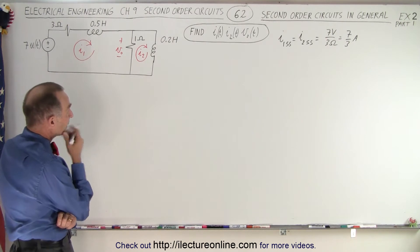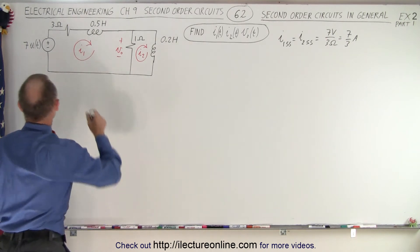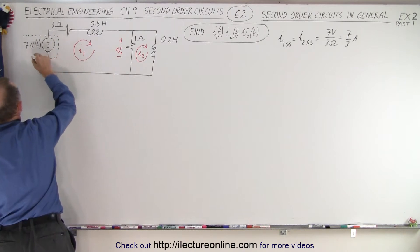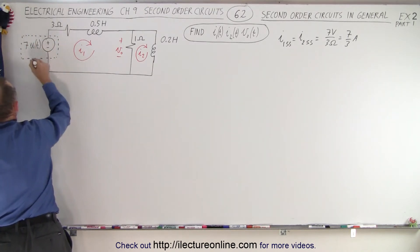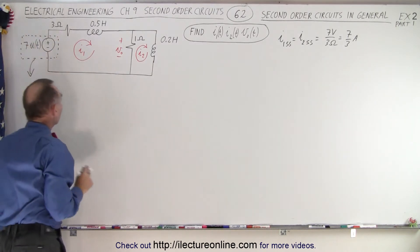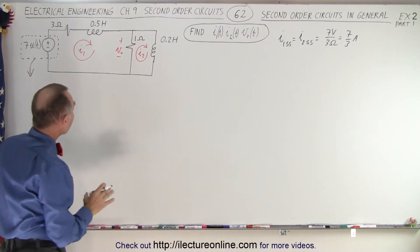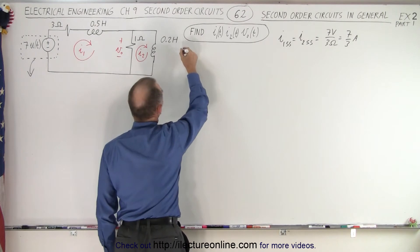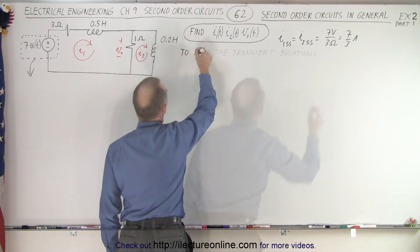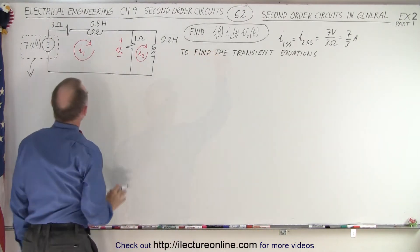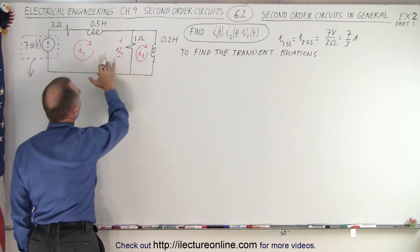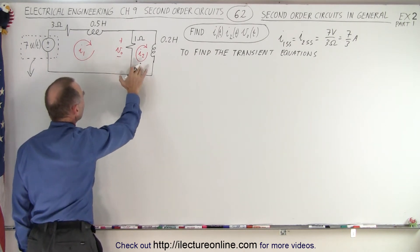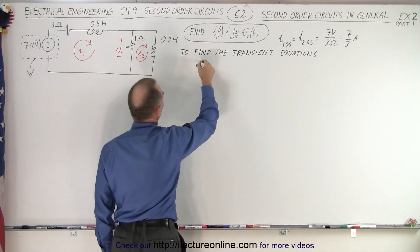Next, we're going to remove the voltage source altogether to find the transient equations. To find the transient equations, we set up two KVLs — Kirchhoff's voltage law for loop 1 and for loop 2.